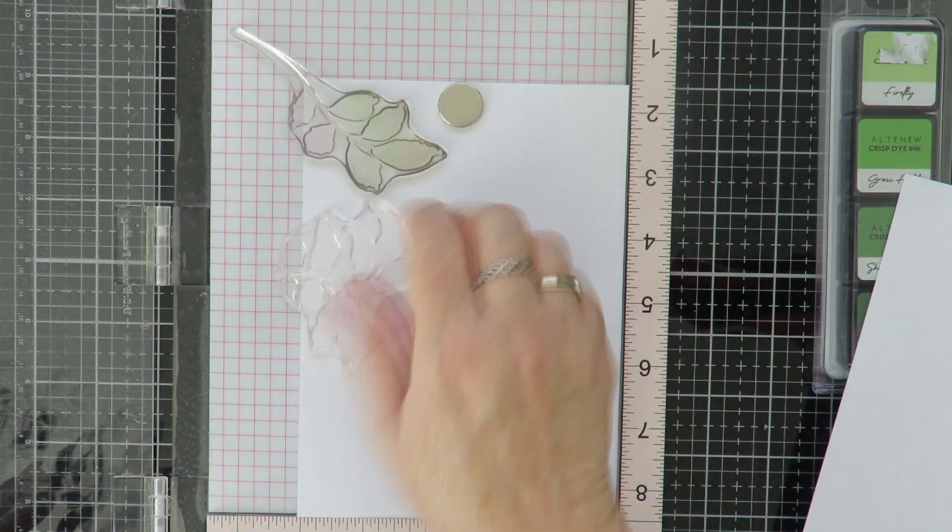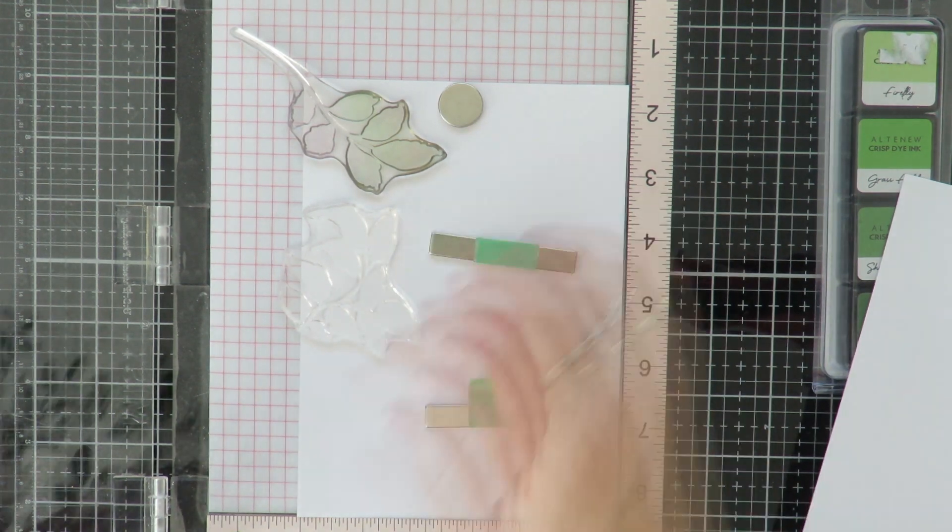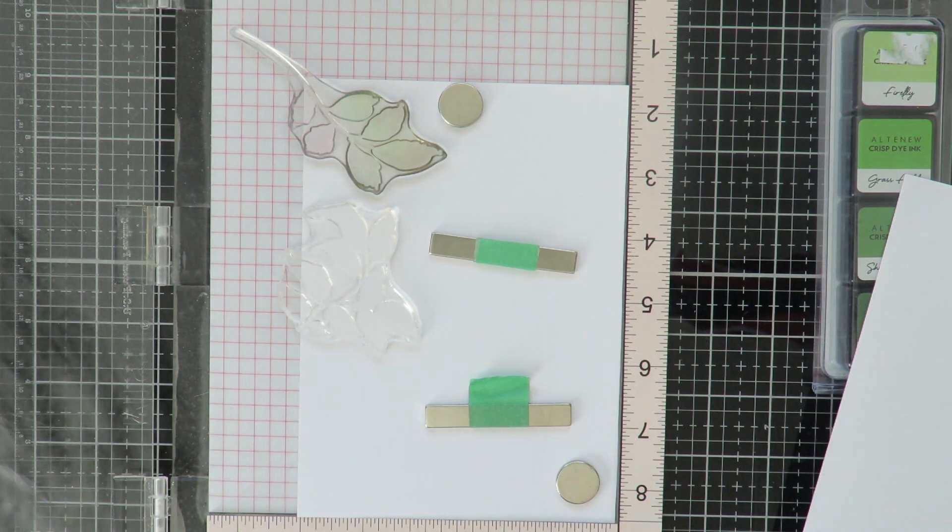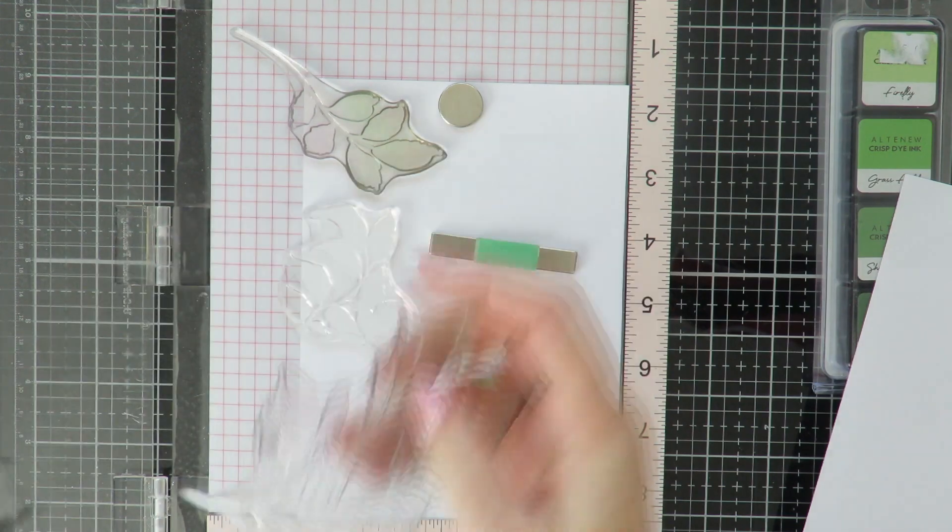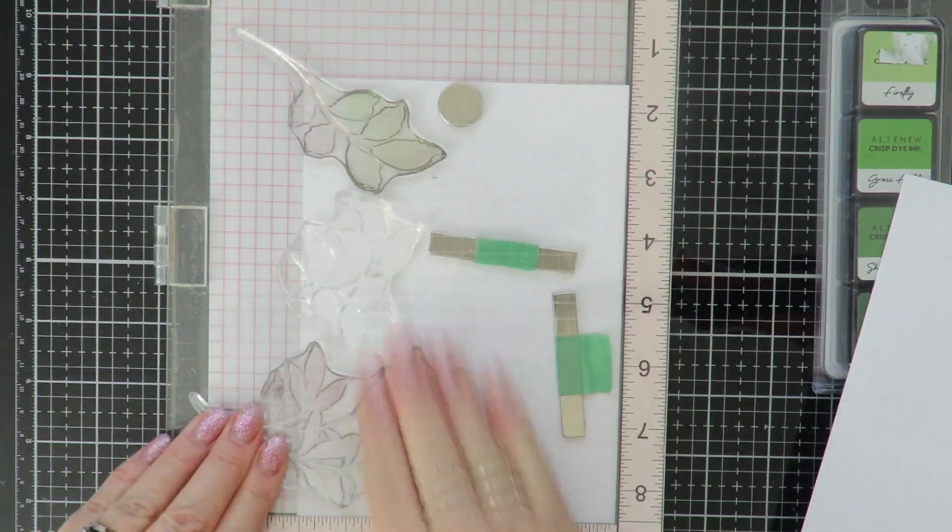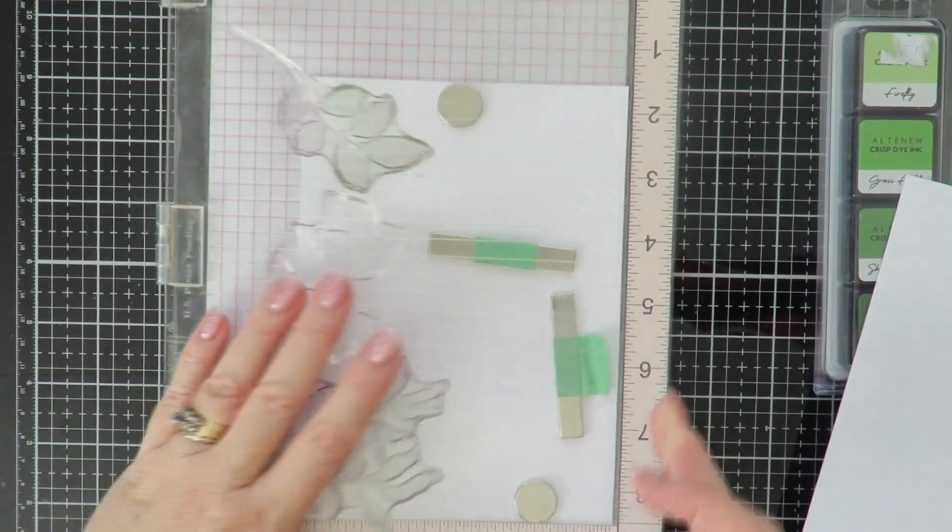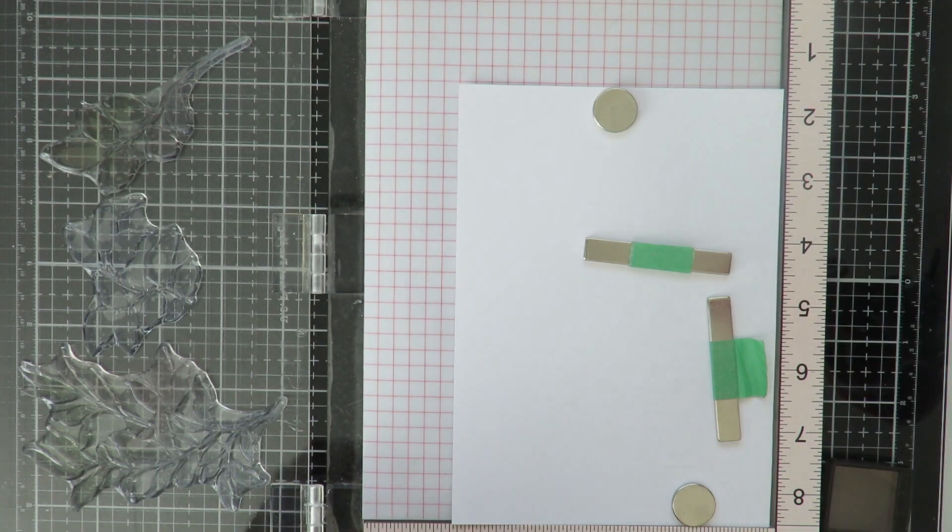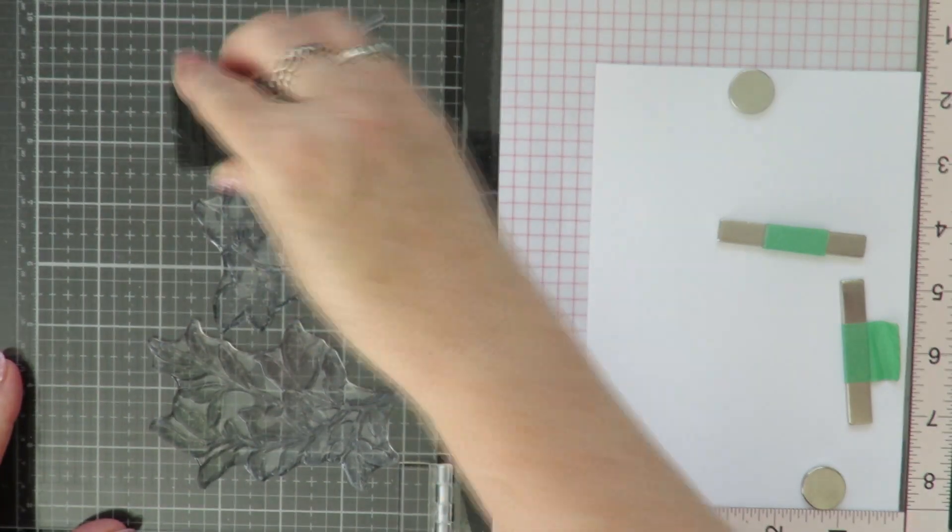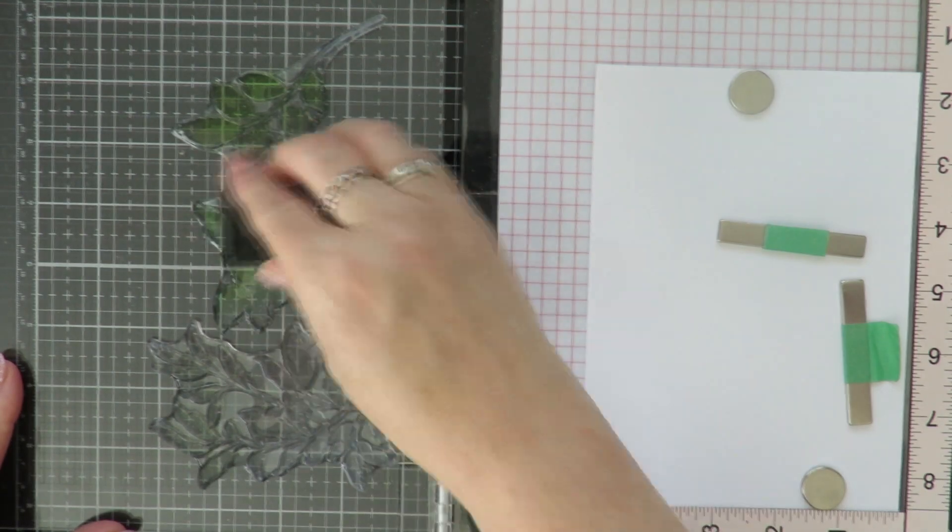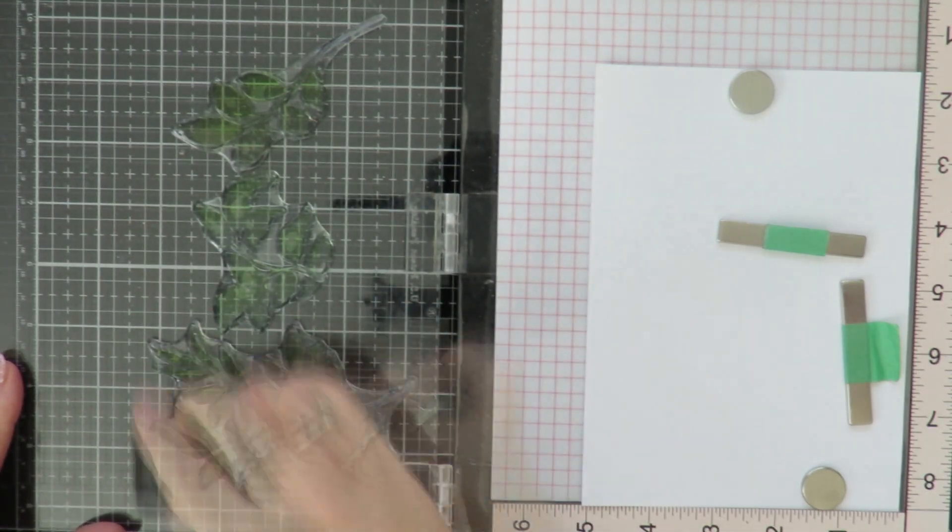This first color combination I'm going to be using the Green Valley set from Altenew, and I'm going to use Firefly for the lightest base color, Grassfields and Shadow Creek for the other two colors.